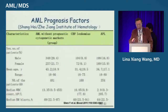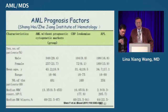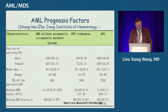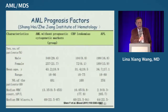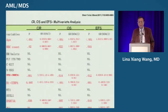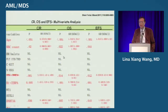First, I will talk about AML prognostic factors. This data comes from the Shanghai and Zhejiang Hematology Institute, including over 1,000 patients. For patients with intermediate prognostic factor markers, there were 348 males and 257 females — predominantly normal cytogenetics. From multivariate analysis, age, white blood cell count, NPM1 mutation, and CEBPA biallelic mutations are independent prognostic factors for complete remission, overall survival, and event-free survival.